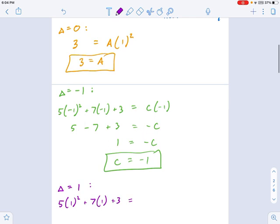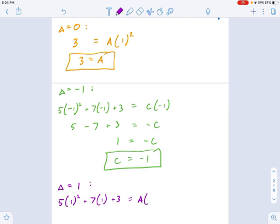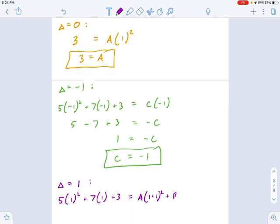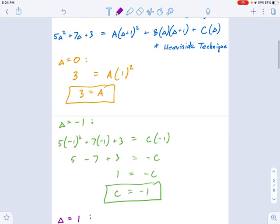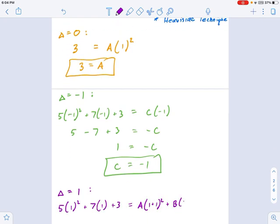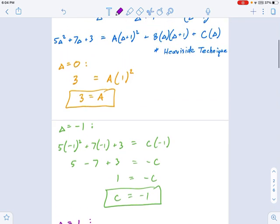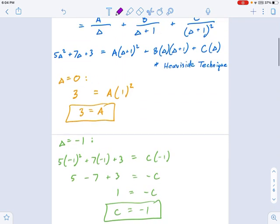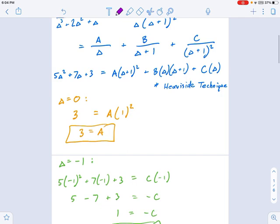We're going to work through this. 5 times 1 squared plus 7 times 1 plus 3, that's what I get on the left side when I plug 1 in for delta. And on the right side, I get A times 1 plus 1 squared, B times 1 times 1 plus 1, and C times 1. That looks good.